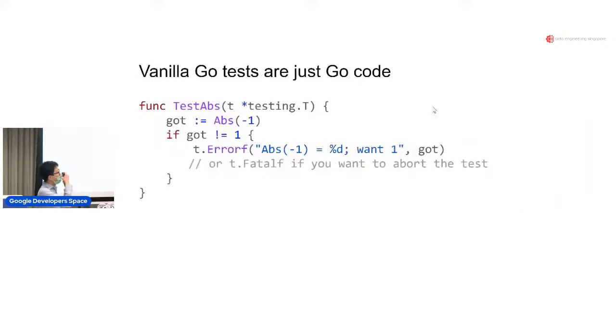So in Go, tests are just ordinary Go code. This example is for maybe testing math.Abs. You pass in negative one, you get one. If it's not one, then you call t.Errorf and write the function name, what you expected, and what you actually got. Maybe if you want to abort a test immediately, you call t.Fatalf instead. So that's your entry point to tests - just Errorf and Fatalf.